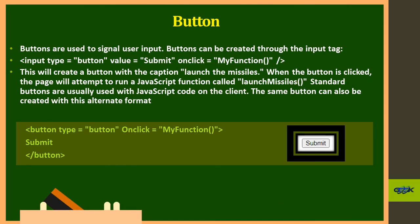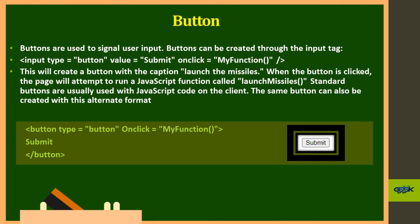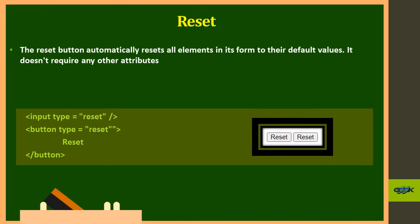For creating a button, the button tag is used with an onclick attribute to call a function. Reset is a type of button used to clear all data entered in a form — text fields, radio buttons, checkboxes, etc. A reset button can be created either using the input tag with type 'reset' or using the button tag.